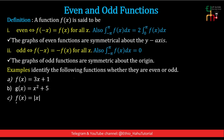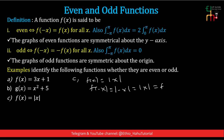Next, f(x) = |x|. We compute f(-x) = |-x|. The absolute value of a negative number is positive, so |-x| = |x|, and this equals f(x). Therefore f(x) = |x| is an even function, because f(-x) = f(x).